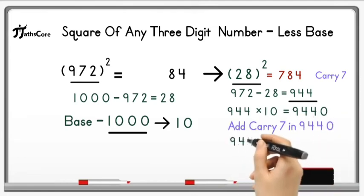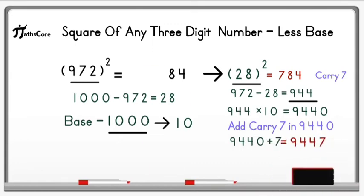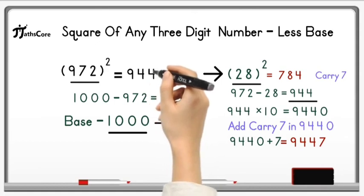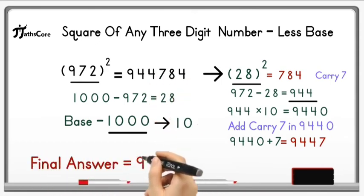So 9440 plus 7 is equal to 9447. Now write down this number before 84 in a product. And this is your final answer, 944,784.